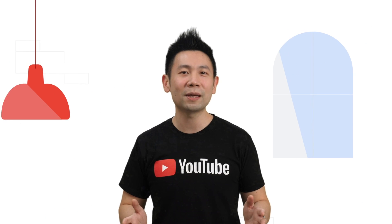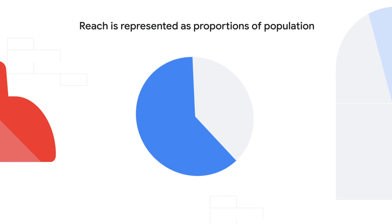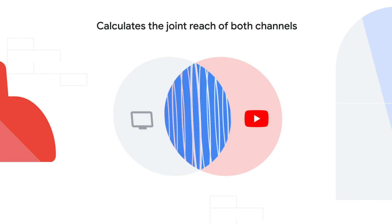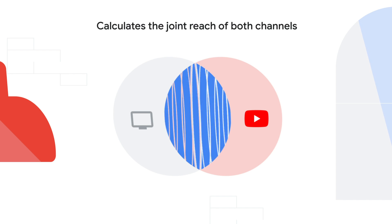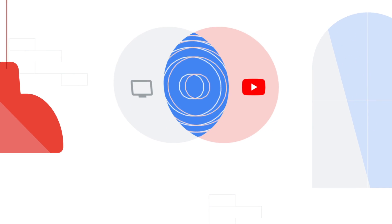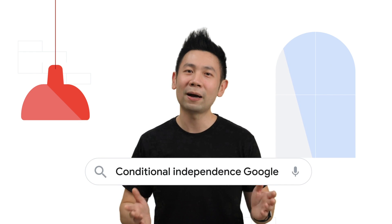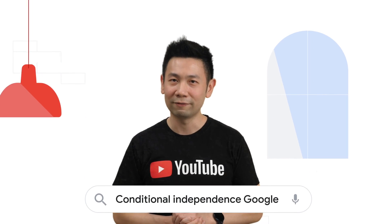Let's assume that we have two channels with reaches represented as proportions of population. The conditional independence model calculates the joint reach, or the percentage of the population reached by both channels. You can see Google's published and peer-reviewed white paper for more information.